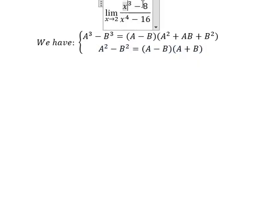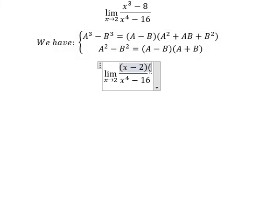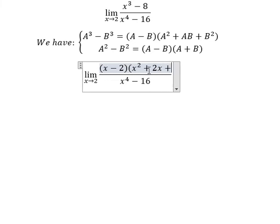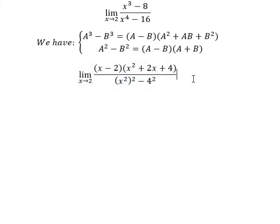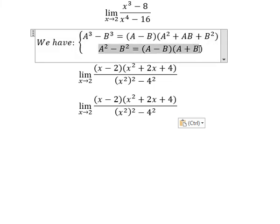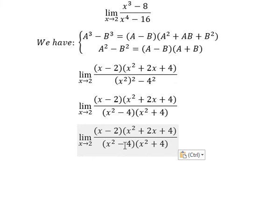We will apply these formulas. For the numerator, a is x and 8 is 2 to the power of 3, so we get x minus 2, multiplied by x squared plus 2x plus 4. For the denominator, 16 is 4 to the power of 2 and x squared is also squared, so we apply the second formula and get x squared minus 4, multiplied by x squared plus 4.